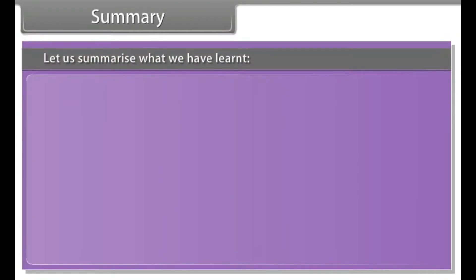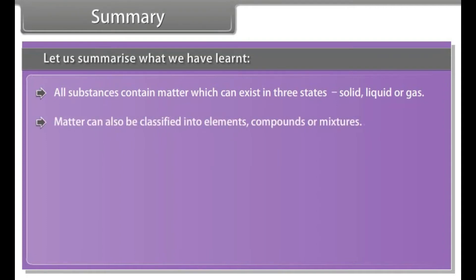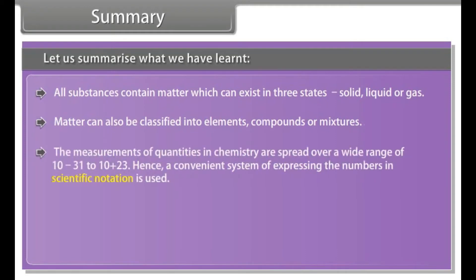Summary: Let us summarize what we have learnt. All substances contain matter which can exist in three states: solid, liquid or gas. Matter can also be classified into elements, compounds or mixtures. The measurements of quantities in chemistry are spread over a wide range of 10⁻³¹ to 10²³.